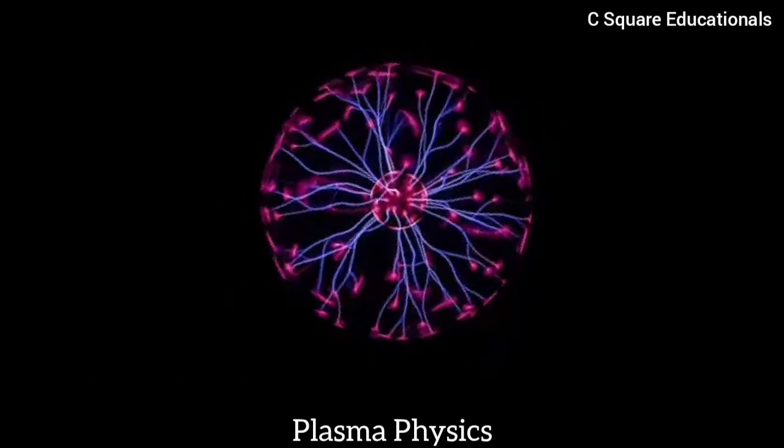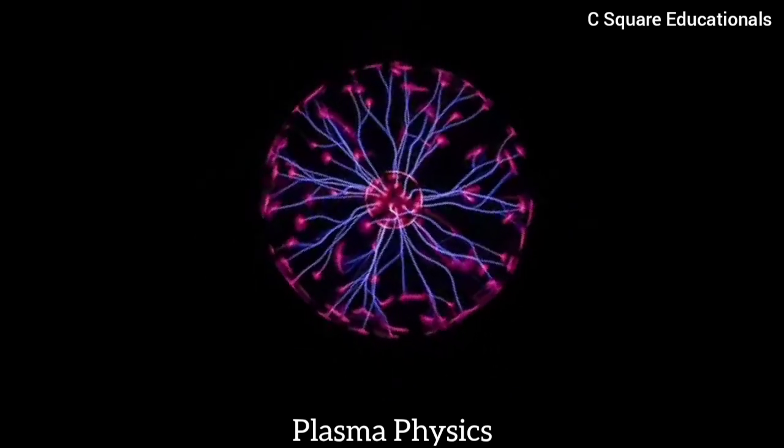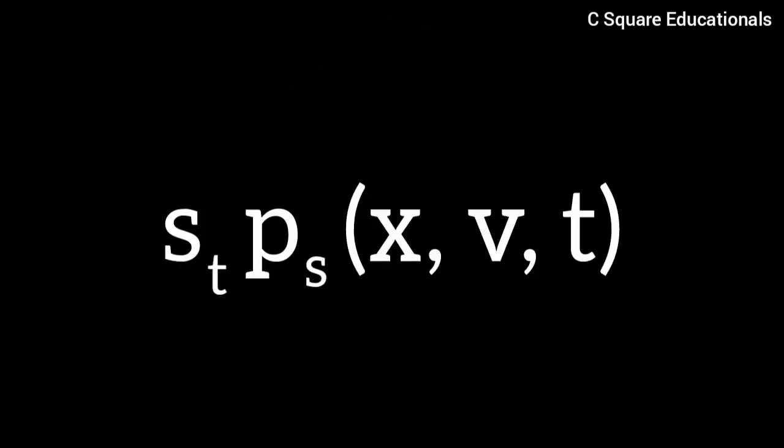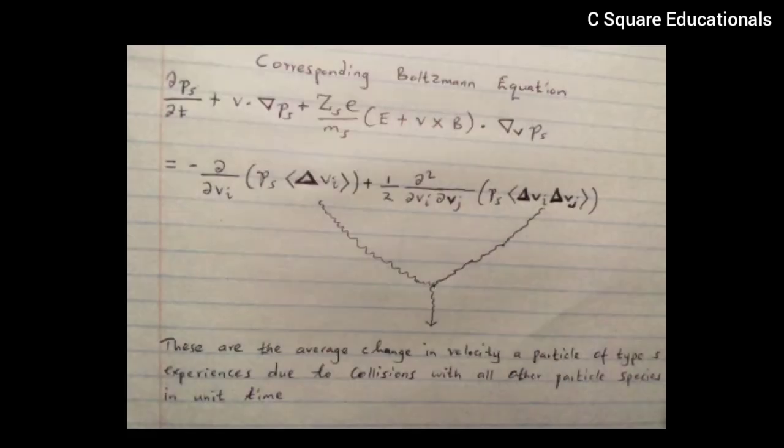In plasma physics, the distribution function for a particular species p_s(x,v,t) takes the place of the probability density function. The corresponding Boltzmann equation is given by partial p_s on partial t plus v dot del p_s plus z_s e on m_s times (E plus v cross B) dot del_v p_s is equivalent to negative partial on partial v_i.